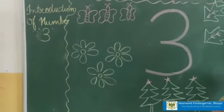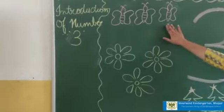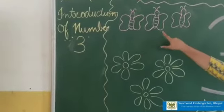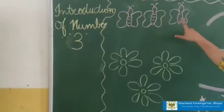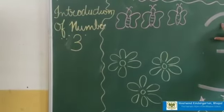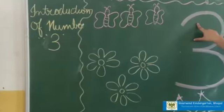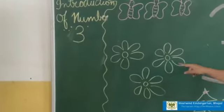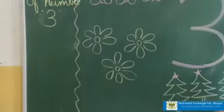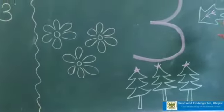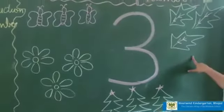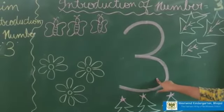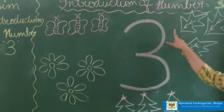Now let's count again. How many butterflies? One, two, three — yes, this is three. Three flowers. Three trees. Three leaves. So which number is this? Three.